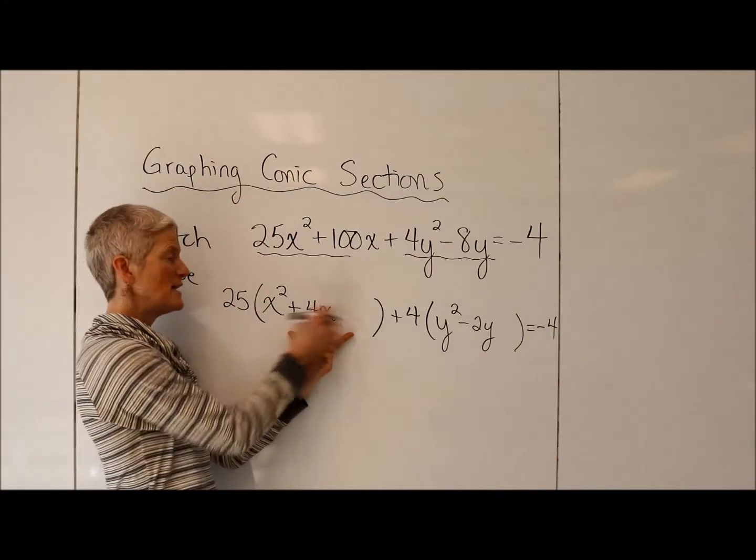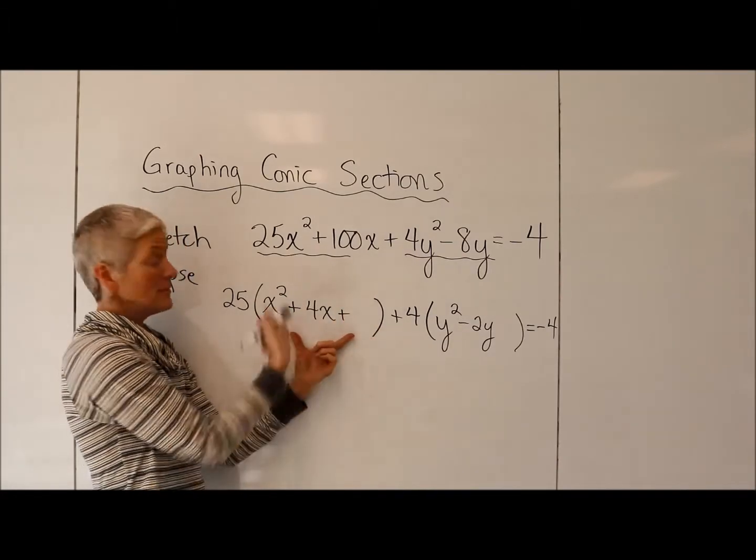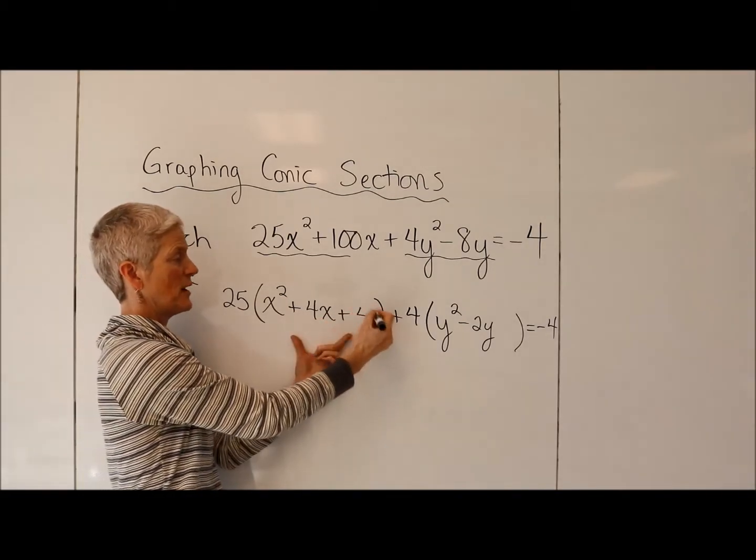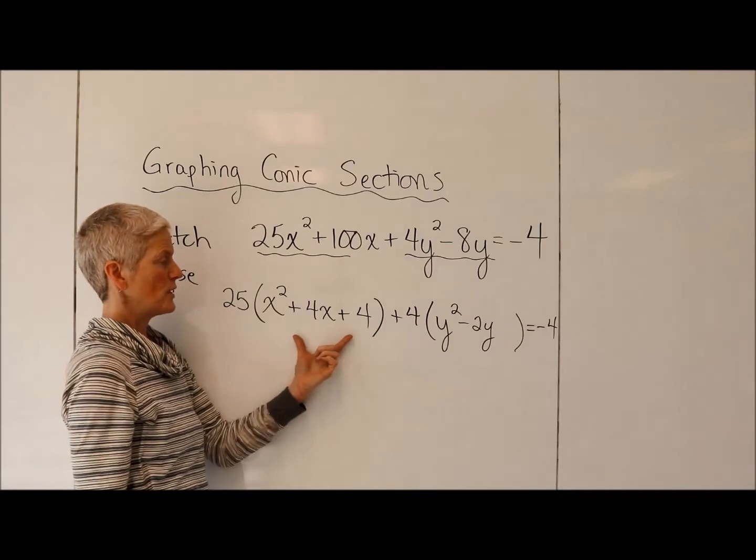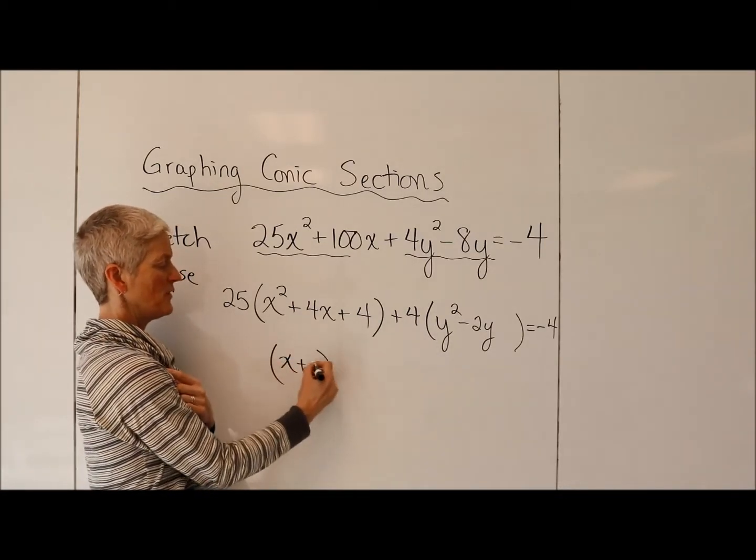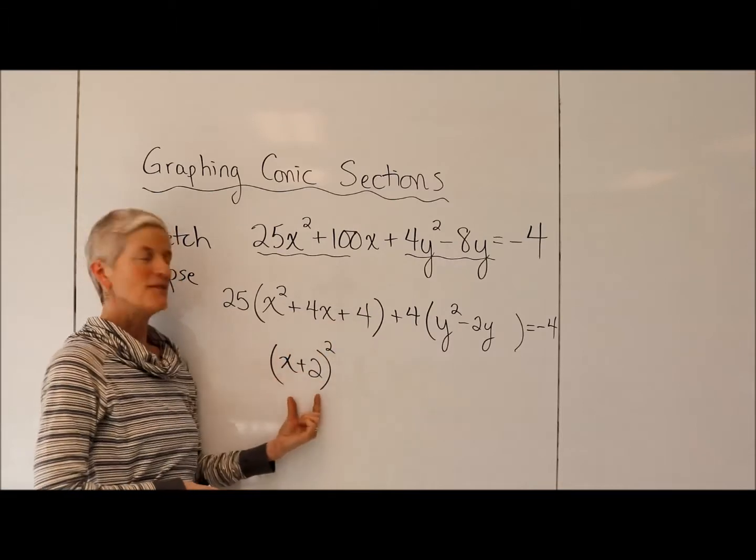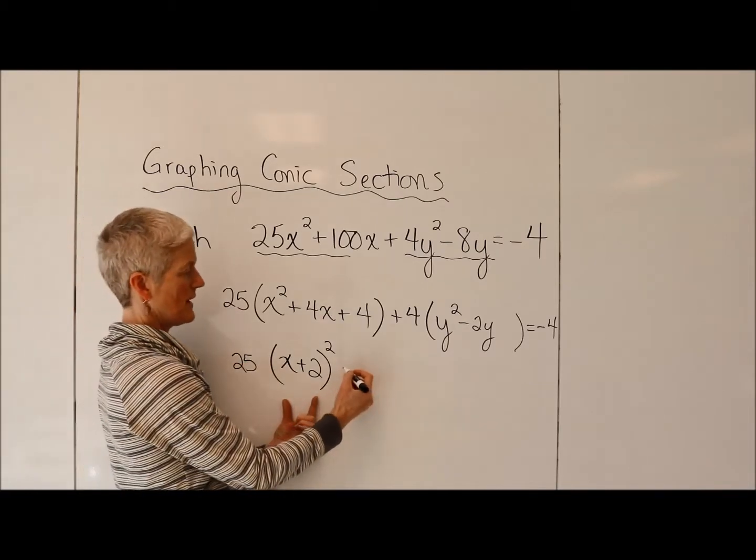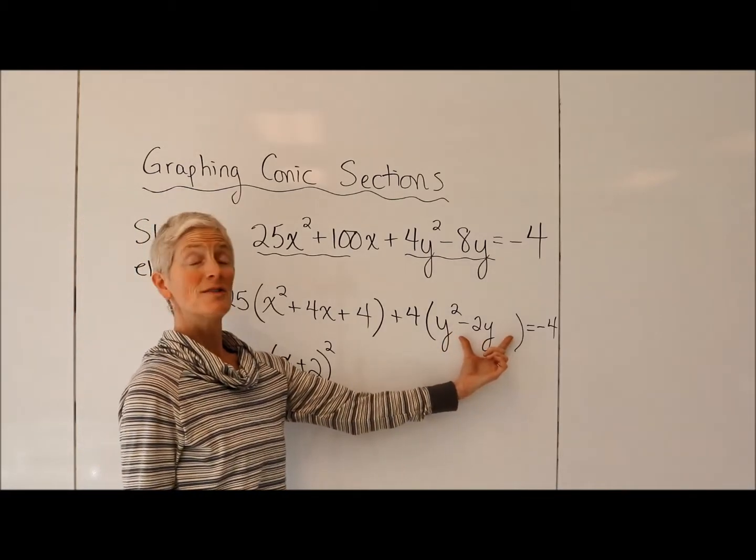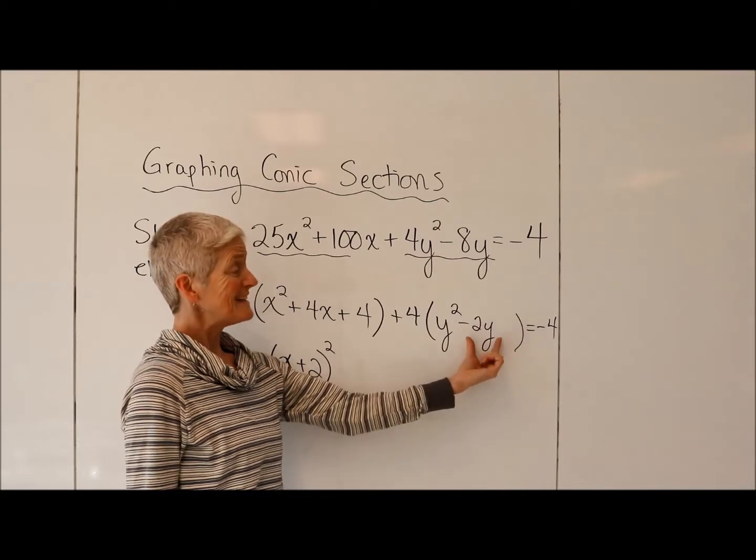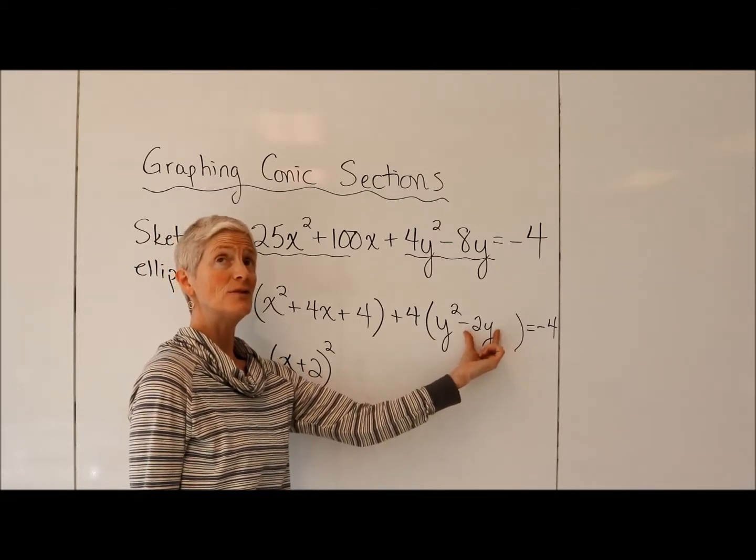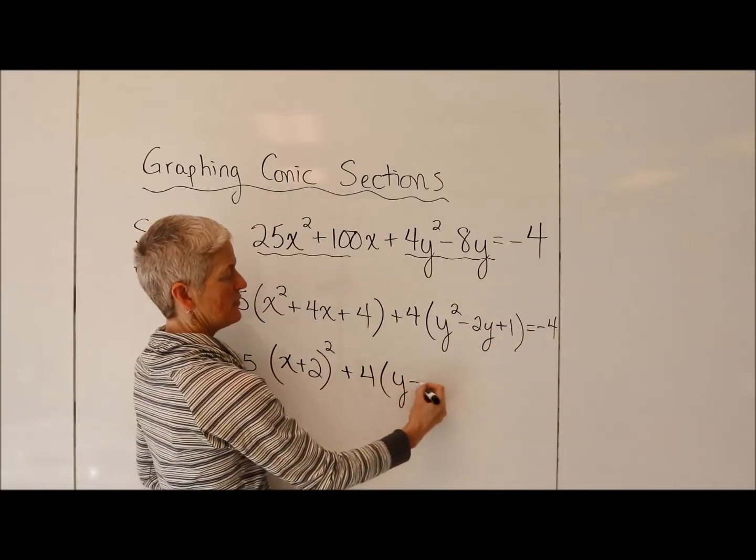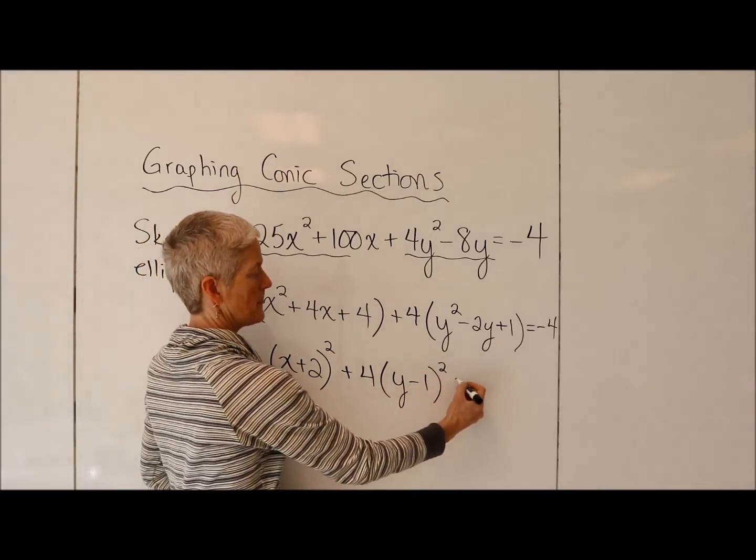So I want to create a perfect square trinomial. The trick is to take half of the middle term, half of 4 is 2, and I'm going to square it to get 4. And if we think about the pattern of perfect square trinomials, that's going to factor to that nice x plus 2 squared. That 25 is there. Now let's do the same thing here. To turn this into a perfect square trinomial, I'm going to take half of that coefficient. Half of negative 2 is negative 1. That squared is plus 1. That's going to factor nicely into a y minus 1 squared.